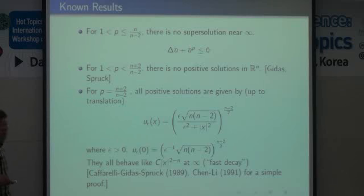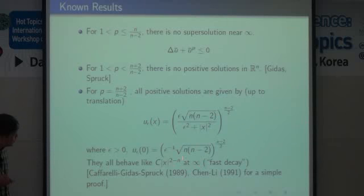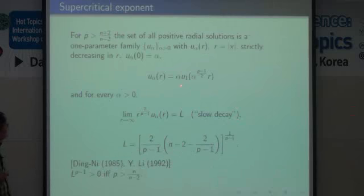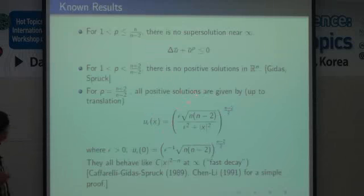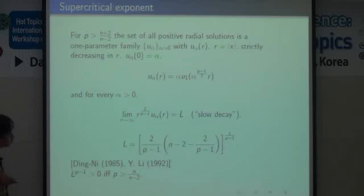It's a second-order equation. The fundamental behavior at infinity is of two types. One is what we call fast decay — that behavior is the fundamental behavior of the Green's function. The next one is slow decay. What is slow decay? It comes from scale invariance, some kind of self-similarity. For P greater than this exponent — the supercritical exponent — there are infinitely many radial solutions.